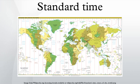Standard time is the synchronization of clocks in different geographical locations within a time zone to a common time standard, usually based on the meridian at the center of the time zone, rather than using a local meridian as a local mean time or solar time standard. Historically, this helped in the process of weather forecasting and train travel. The concept became established during the 19th century, and the time so set has come to be defined in terms of offsets from universal time.